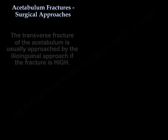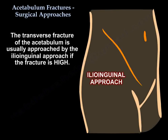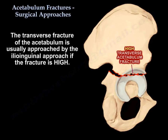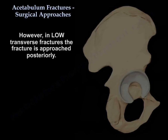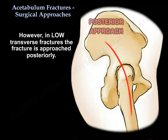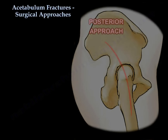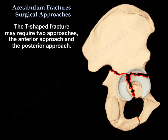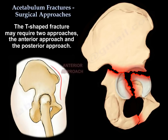The transverse fracture is usually approached by the ilioinguinal approach if the fracture is high. However, in low fractures, you can approach that fracture posteriorly. The T fracture may need two approaches: an anterior and posterior approach.